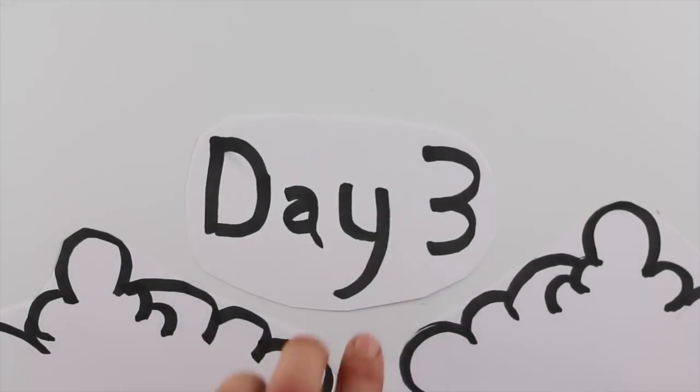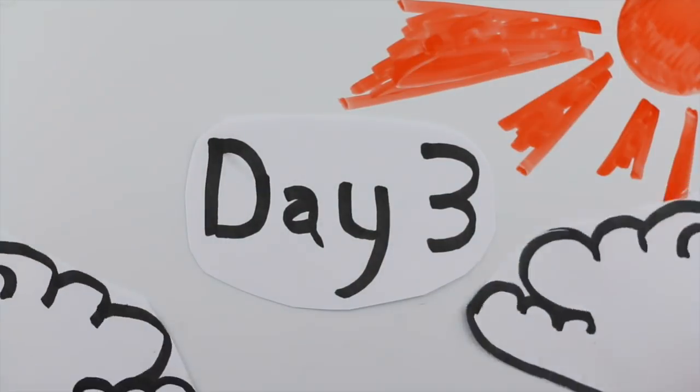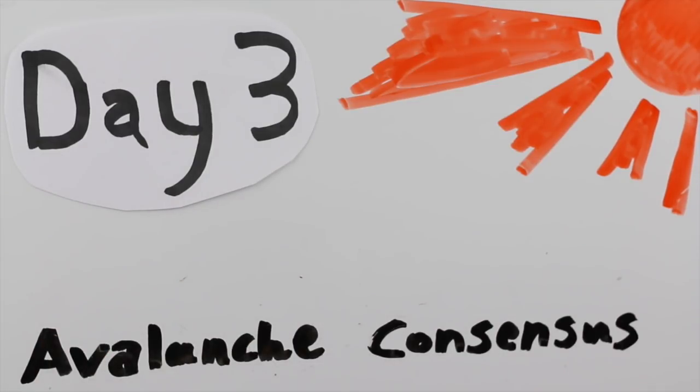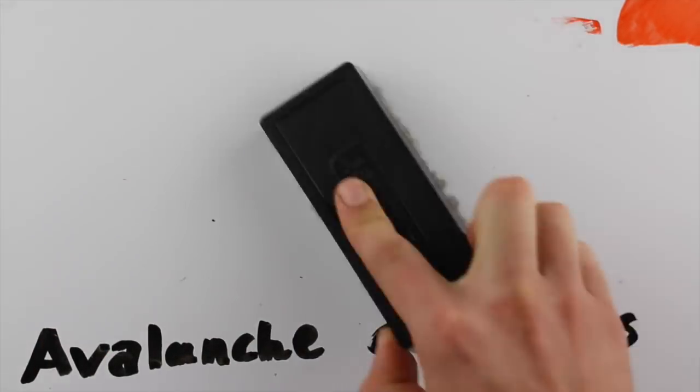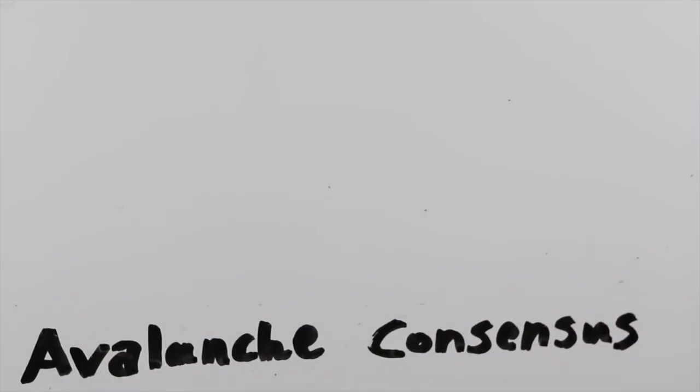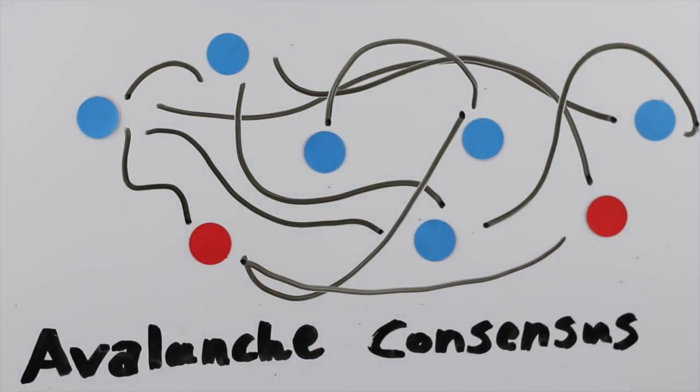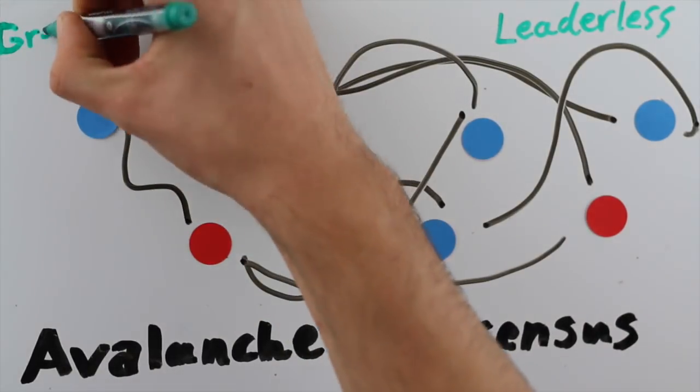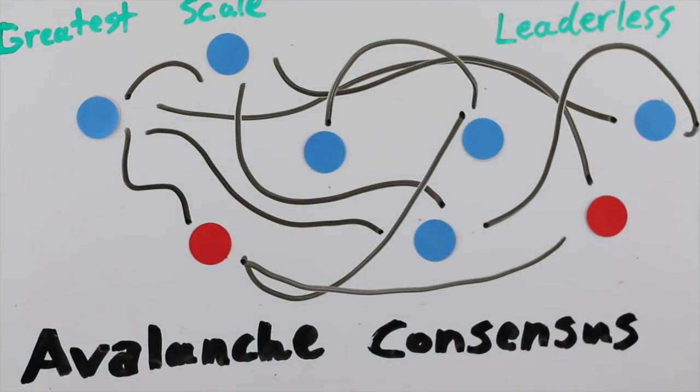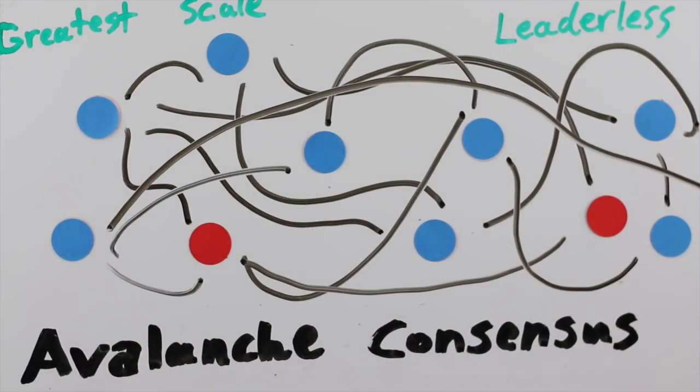But then, on the third day, Team Rocket created Avalanche Consensus. Avalanche is a new consensus protocol that is a bit different than the other two models. Instead of leaders being elected or earned through competition, Avalanche is leaderless in nature. Every node on the network has a vote. There are no specially privileged nodes running things. It's highly scalable on node count, and very fast.